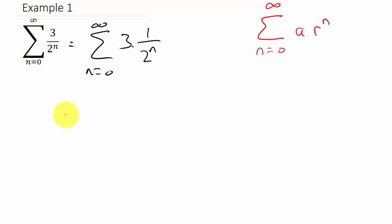All right, so I still don't have it quite like it needs to look. You see here, the three, that's my a, but I don't have R raised to the n. I have one over two to the n, so let me rewrite that.